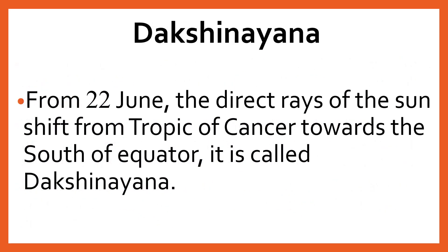Students, the complement of Uttarayan is Dakshinayan. From 22nd June, the direct rays of the sun shift from the Tropic of Cancer towards the south of the equator. This is called Dakshinayan.